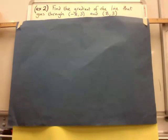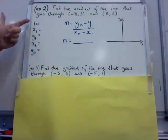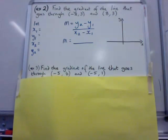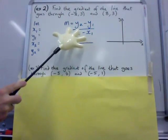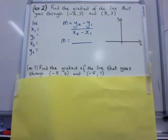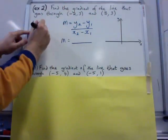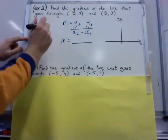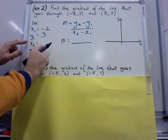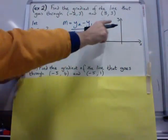Okay, let's see if you answered this correctly. Like last time, you should have listed the variables and also written the formula: m equals y2 minus y1 divided by x2 minus x1. You should have listed the variables. I'm going to decide for x1 I'm going to use minus 2, that means I have to use 3 for y1. x2 I'm going to use 8, and y2 I'm using 3.